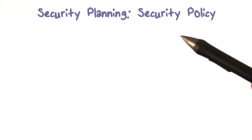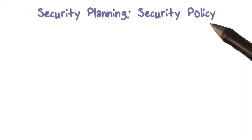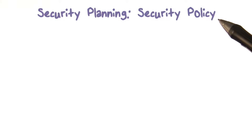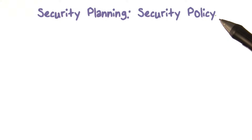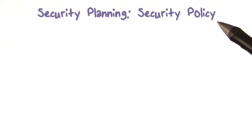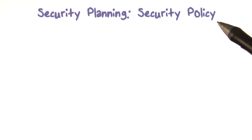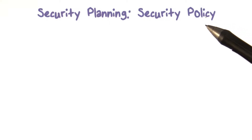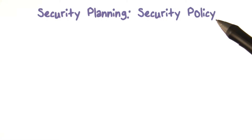We talked about how security planning consists of many different parts. The last topic was controls. Next we talk about what we call a security policy. We're talking really about enterprise security policy — you could have policies at a national level, the federal government may have one across its different agencies and each agency may have its own, but in the context of an enterprise, security planning requires that you have some sort of a security policy.